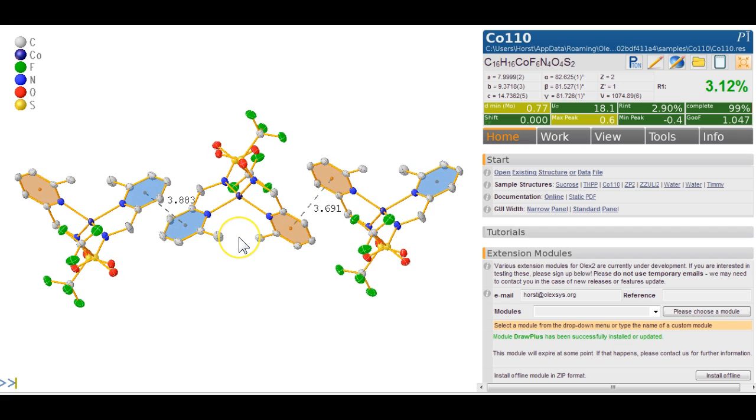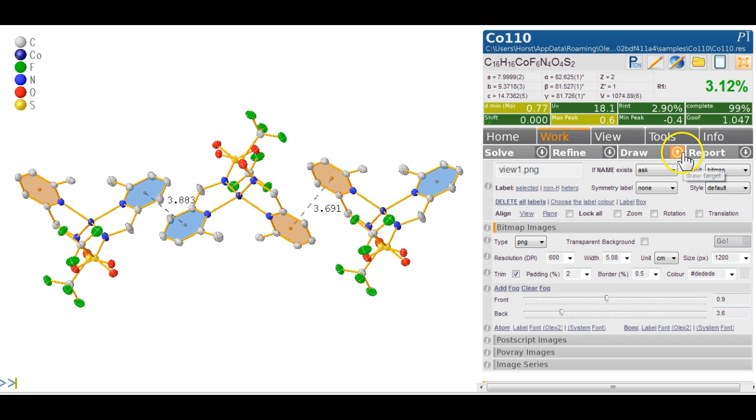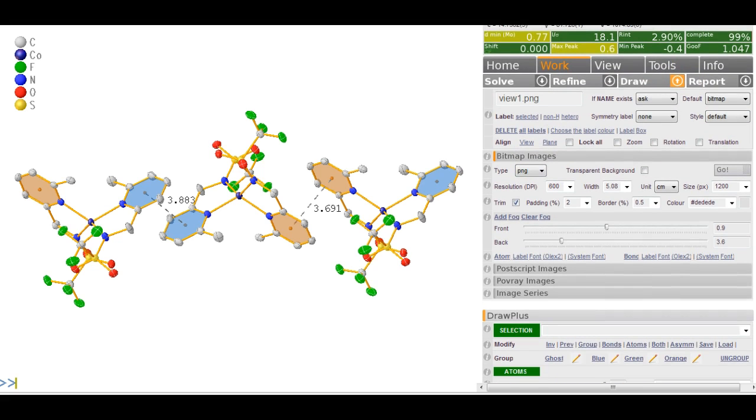You can get quite a nice picture here. Once you've done the picture that you're happy with, you would head over to work and draw. And here's the bitmap images and things you can make. Resolution 600 dpi at, I don't know what, centimeters. So it's 600 dpi at 5.08 centimeters would come out as 1200 pixels. So there we go. And if I click on go, it will make the picture with that name here.